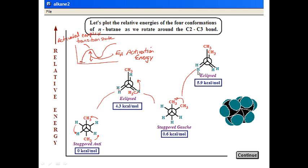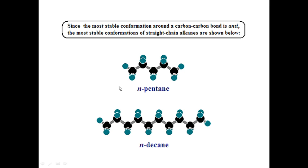If you lowered the temperature, you could begin to freeze these conformations out by giving them less energy than the activation energy barrier. Thermal energy at room temperature gives molecules about 20 kilocalories per mole to work with, so overcoming a 6 kilocalories per mole barrier is not difficult. The idea is to be able to write conformations of alkanes and determine which ones are more or less stable. Straight-chain alkanes like n-pentane and n-decane are often drawn in a zigzag conformation — that's the most stable staggered conformation.